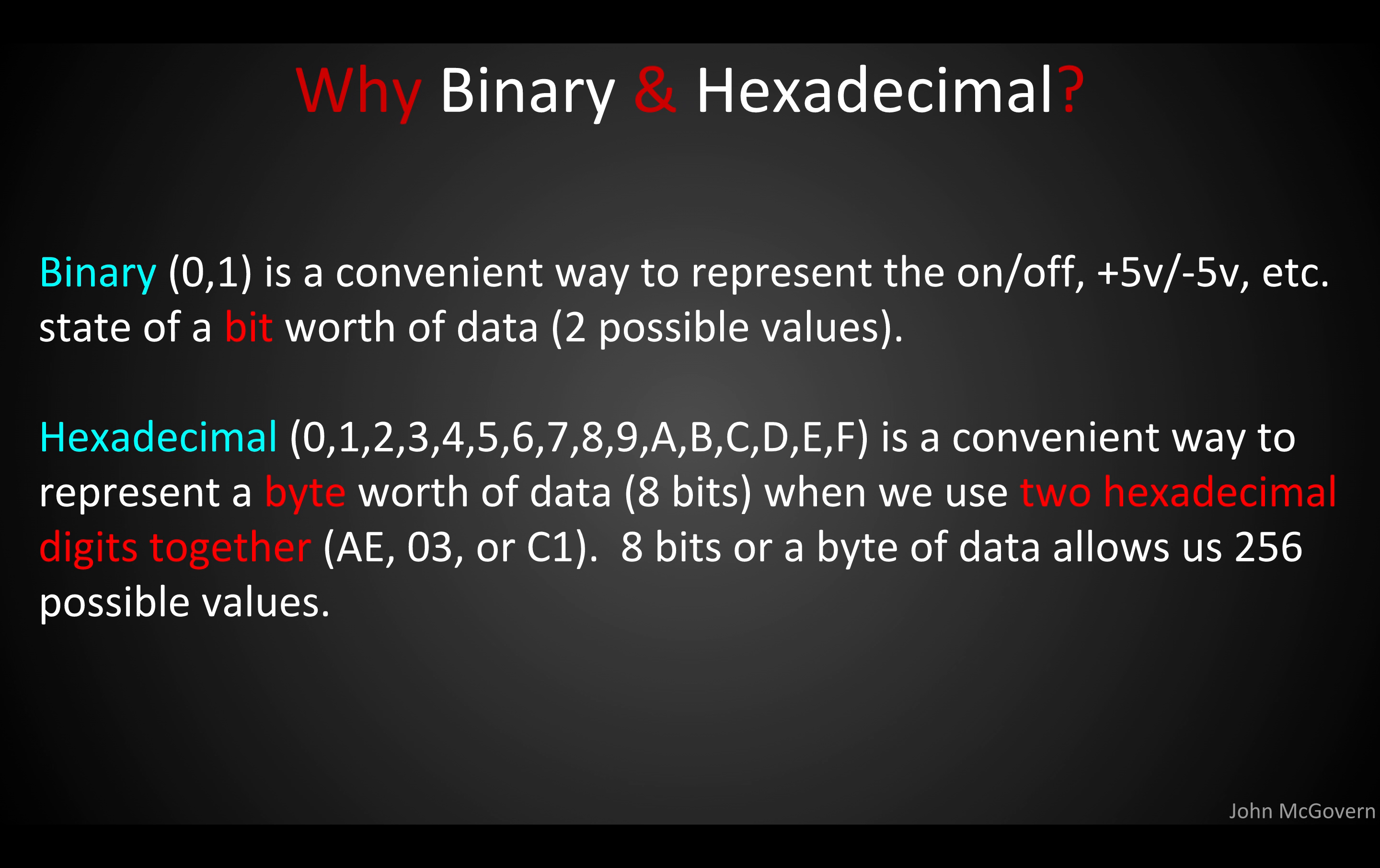Now hexadecimal is a convenient way if you put two hexadecimal digits together to represent a byte worth of data, 8 bits of data. So you put two hexadecimal digits together, and that allows for 256 possible values. So with just two digits, like A or 0, 3 or C, 1, you can represent 256 possible values. So that's a convenient shorthand for us.